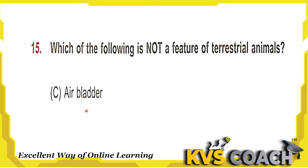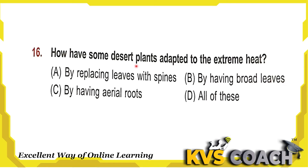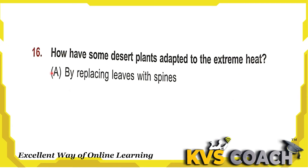Next question: how have some desert plants adapted to extreme heat? Option A — by replacing leaves with spines — yes, this is right; they replace leaves with spines to decrease the number of stomata and reduce water vaporization. Option B — by having broad leaves — no, broad leaves mean more stomata and more water loss. Option C — by having aerial roots — no. So the right answer is option A — by replacing leaves with spines.